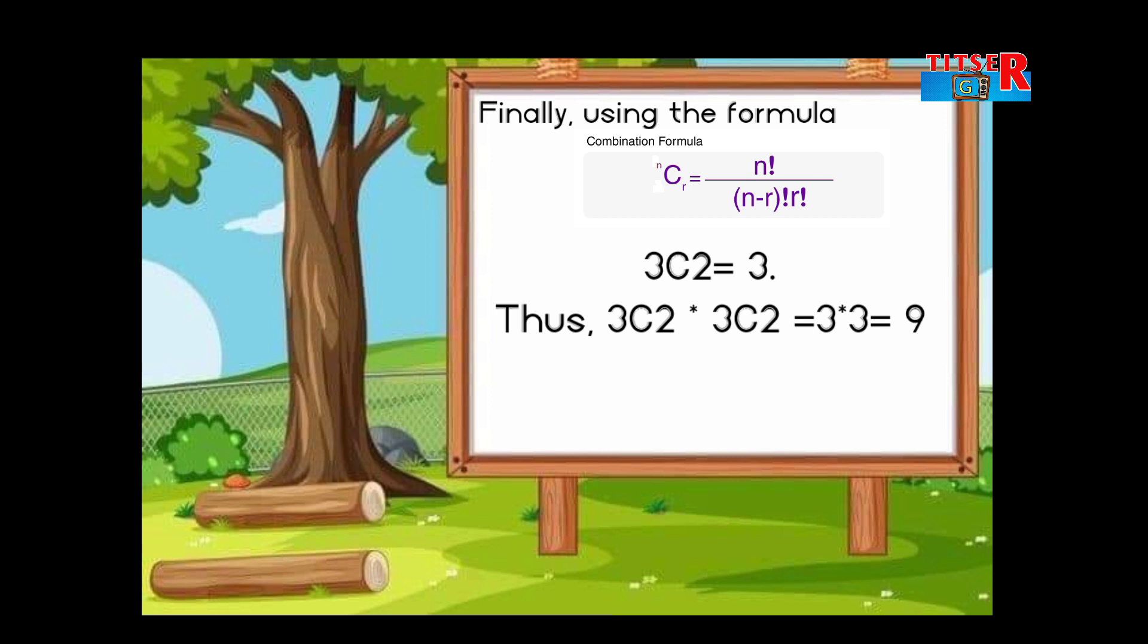Finally, using the formula, 3C2 times 3C2 equals 3 times 3 equals 9. There are nine rectangles found in a 2×2 grid.